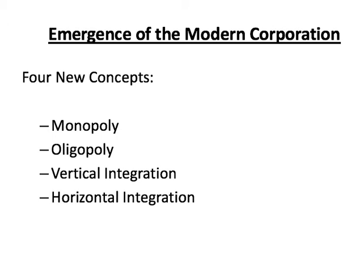There are four key concepts to look at: monopoly, oligopoly, vertical integration, and horizontal integration. I'll explain the first two now, and cover vertical and horizontal integration later by showing how they work. Monopoly is when a particular market or industry is controlled basically by one corporation — not necessarily 100% of the market, but around 70%, 80%, or 90% of it.